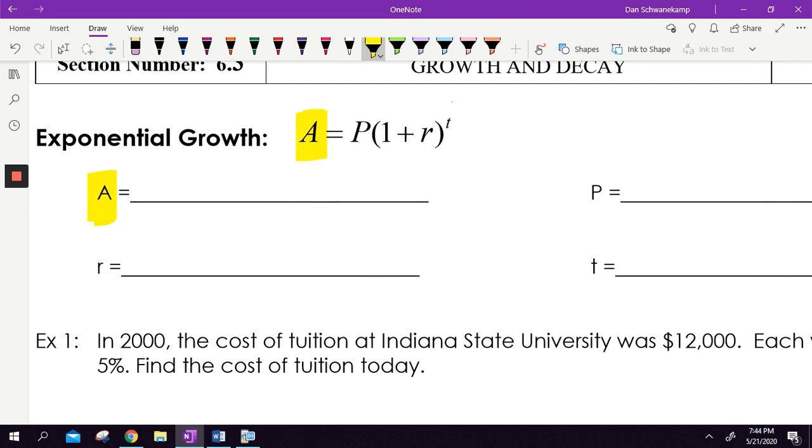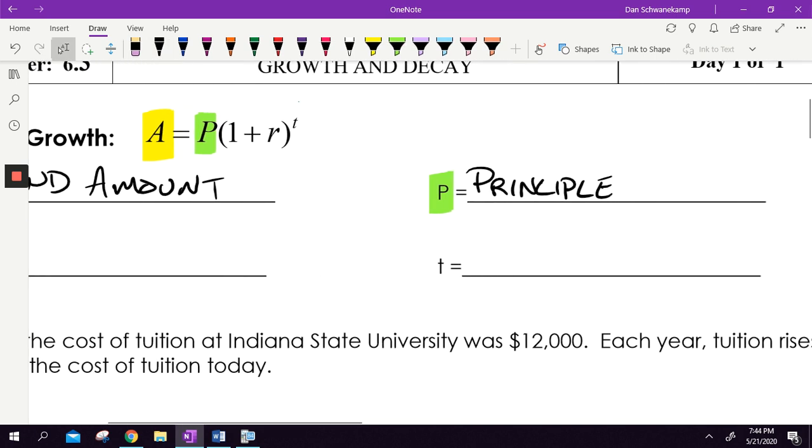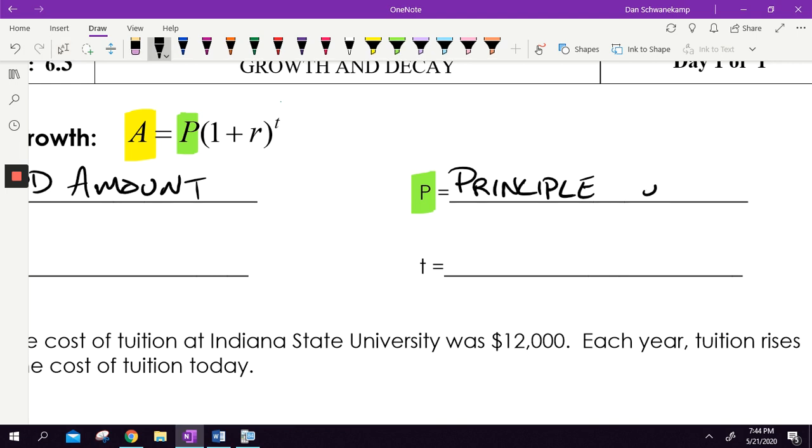Let's talk about each thing. We've got this A first. The A here, that is your ending amount. How much are you going to end up with in the situation? How much money? How many insects? How many rabbits? Whatever the problem stands for. The A is going to be the ending amount. The P here stands for the principal. When we talk about principal here, it is your starting amount.